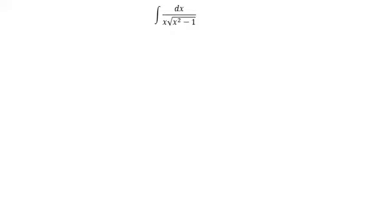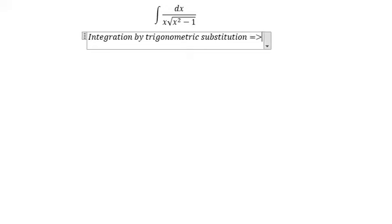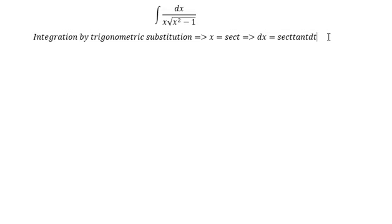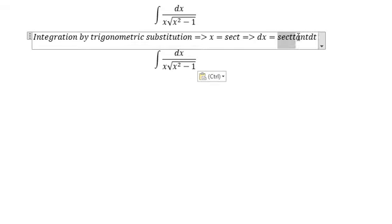We need to use integration by trigonometric substitution. We put x equal to sec(t), so we need to change this integral. We change x for sec(t).